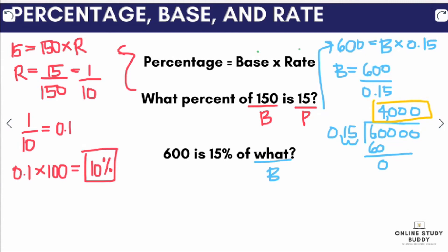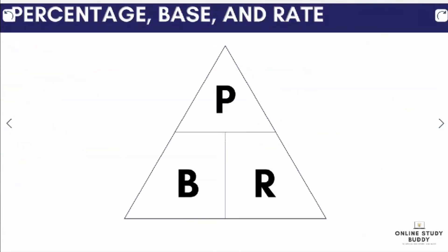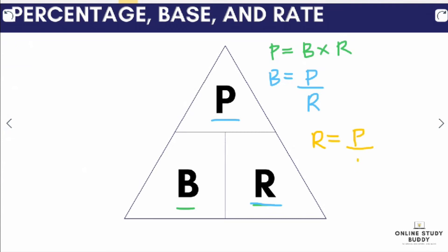To help remember the formula, we can use the PBR triangle. At the top we have the percentage P, and at the bottom we have the base B and rate R. To solve for the percentage, we multiply base times rate. To solve for the base, we divide the percentage by the rate. To solve for the rate, we divide the percentage by the base.